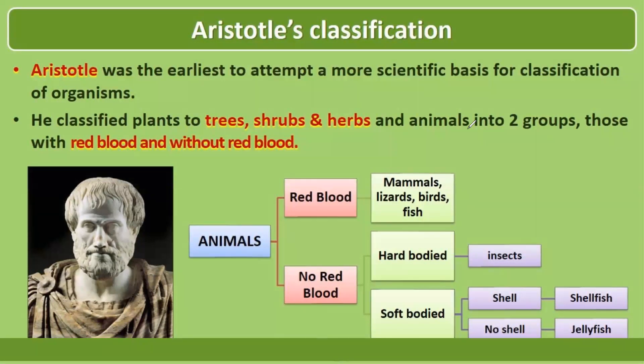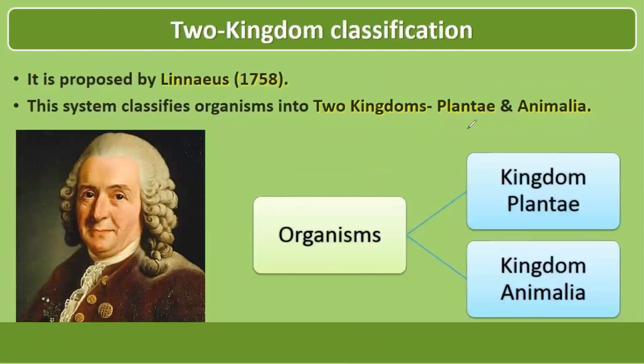Aristotle was the earliest to attempt a more scientific basis for classification of organisms, but he classified plants and animals only. He classified plants into trees, shrubs and herbs, whereas animals were classified into two groups: those with red blood and without red blood. Since there was no indication of bacteria, fungi, or protists, his classification was rejected.